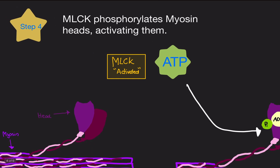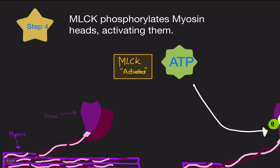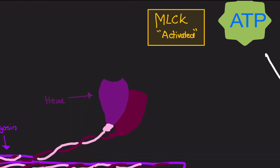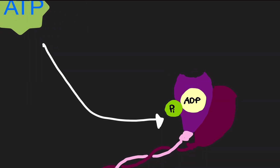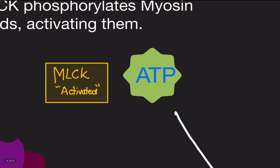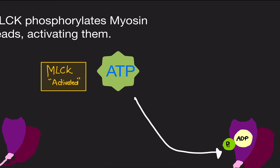Once activated, MLCK is able to phosphorylate the myosin heads, which activates them. The myosin head starts out doing nothing — just sitting there. MLCK comes along and signals a nearby ATP molecule, essentially guiding it to the myosin head. The ATP gives the myosin head a phosphate group, producing ADP, which gives the myosin head energy to do work.